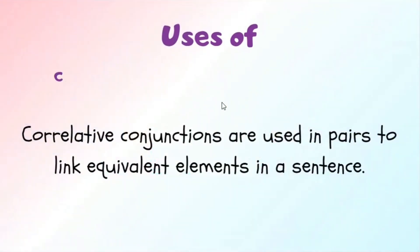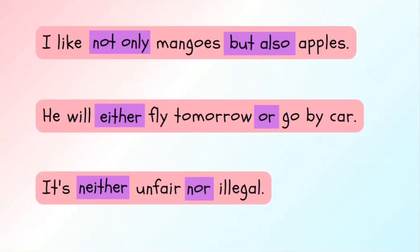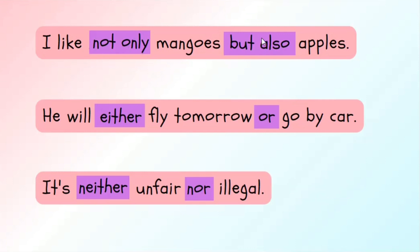Let's jump on to correlative conjunctions. Correlative conjunctions are used in pairs to link equivalent elements in a sentence. To understand this, it's better to look at the examples. 'I like not only mangoes, but also apples.' As I mentioned, they are used in pairs — 'not only... but also.' And there must be an equivalent element right after each conjunction. 'Mangoes' is a noun and 'apples' is also a noun. Note: writing 'I not only like mangoes and apples' would be wrong — mangoes and apples must come right after 'not only' and 'but also.'